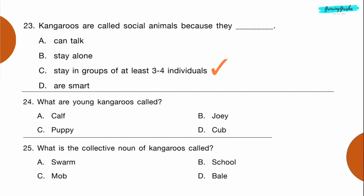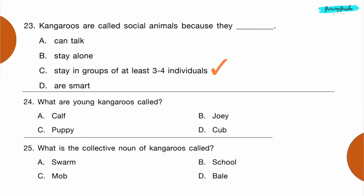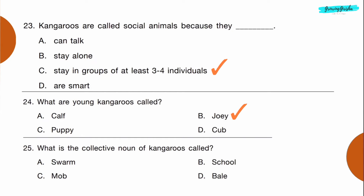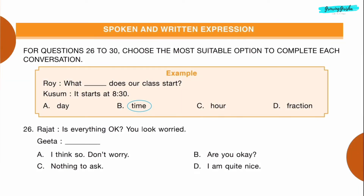Question 23: Kangaroos are called social animals because they dash. Option C: stay in groups of at least three to four individuals. Question 24: What are young kangaroos called? Option B: joey. Question 25: What is the collective noun for kangaroos called? Option C: mob.